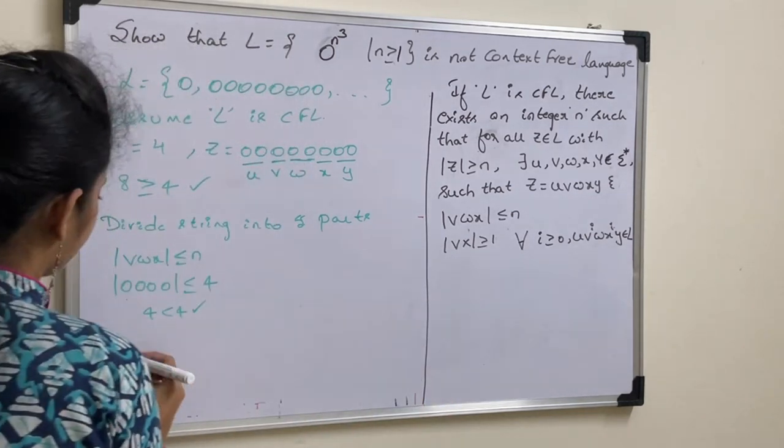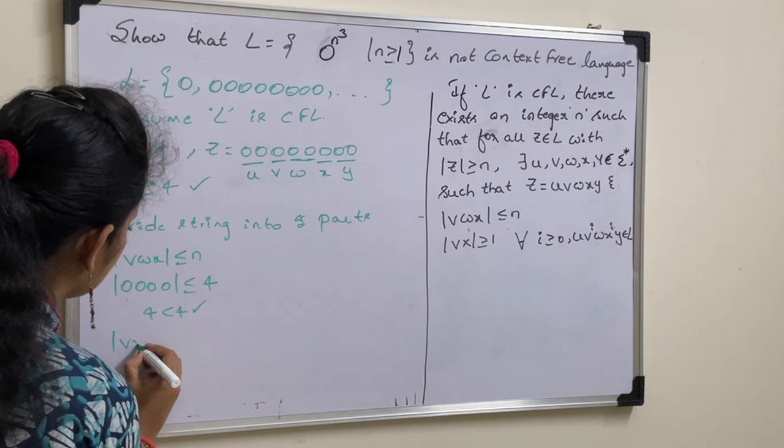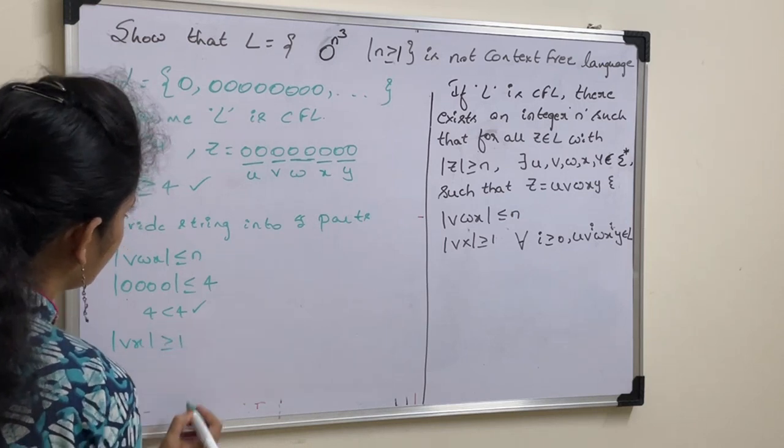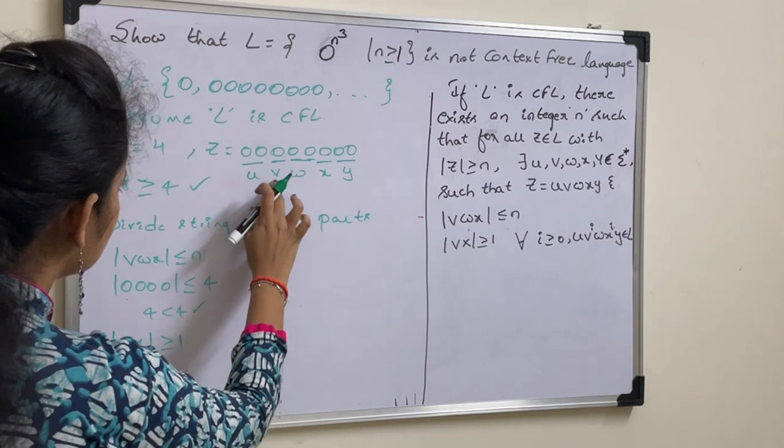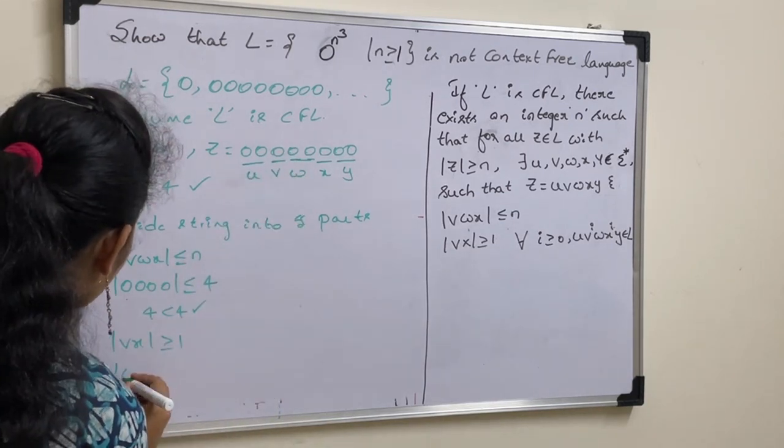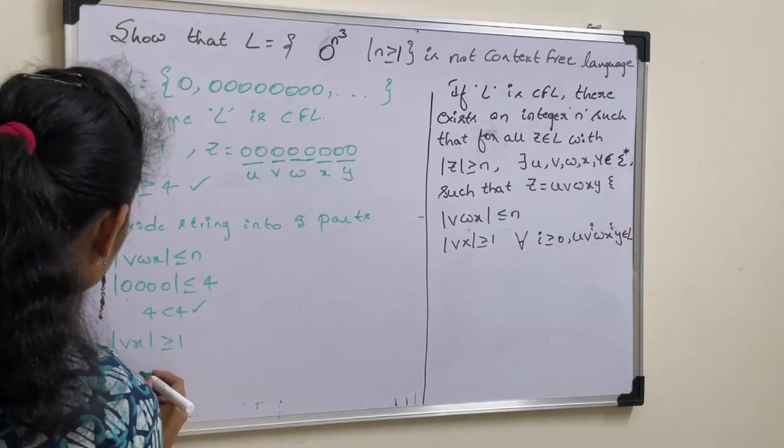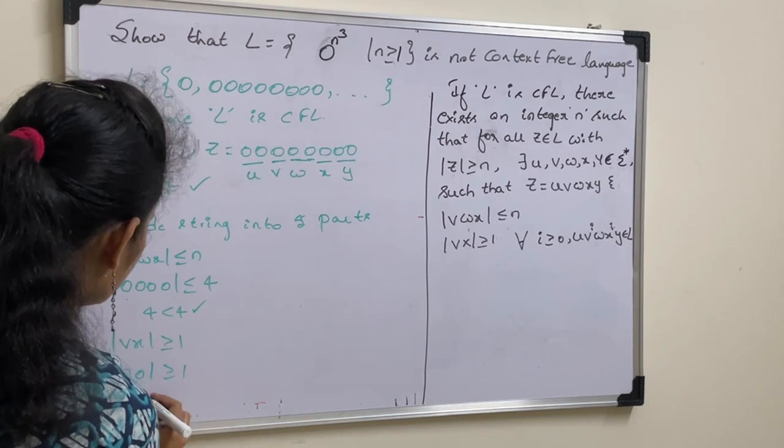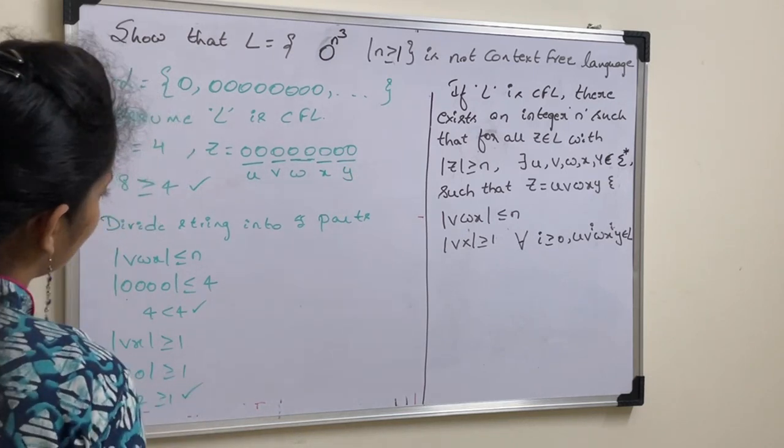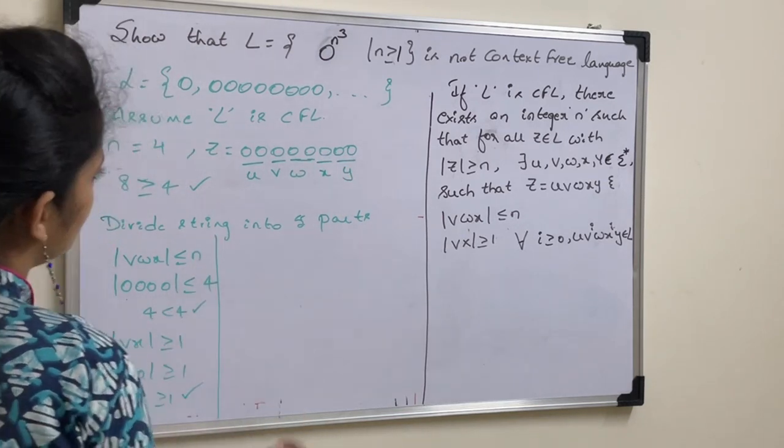Check this one. Mod v, x greater than or equal to 1. V value is 0. X value is 0. So, 2 greater than or equal to 1. Again, condition true.